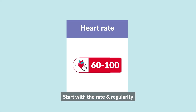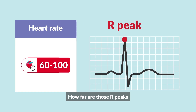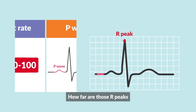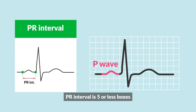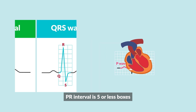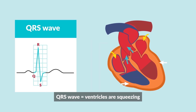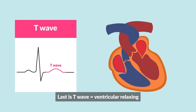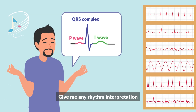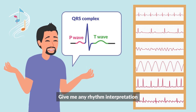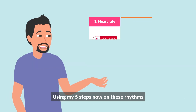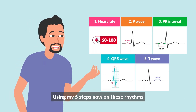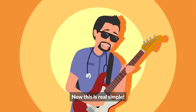How far are those R-to-P intervals? Is the P wave in the EKG rhythm? Peak or interval — is it five or less boxes? QRS wave, ventricles are squeezing. Last is the T wave and the ventricles relaxing. Give me any rhythm — interpretation! Schooling the instructor. Now this is real — using my five steps on these rhythms. Now this is real simple.